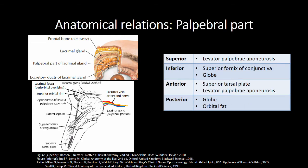The palpable part is related to the levator aponeurosis superiorly. Inferiorly lies the superior fornix of the conjunctiva and the globe. Anteriorly lie the superior tarsal plate and levator aponeurosis. Posteriorly lie the globe and orbital fat.